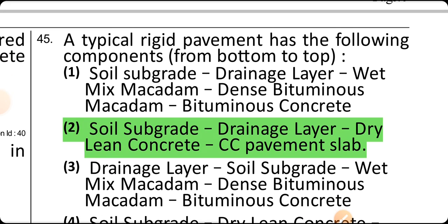A typical rigid pavement has the following components from bottom to top: soil subgrade, drainage layer, dry lean concrete, and then the CC pavement slab.